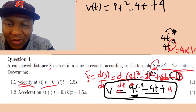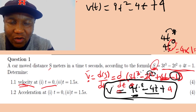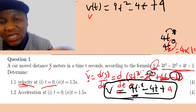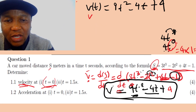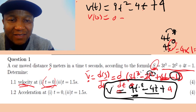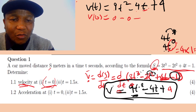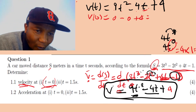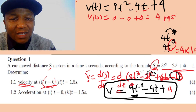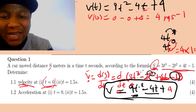They then say find the velocity when t equals 0. So we write velocity(0), and substitute t = 0: 9 times 0² equals 0, minus 4 times 0 equals 0, plus 4. So velocity equals 4 meters per second when t equals 0.